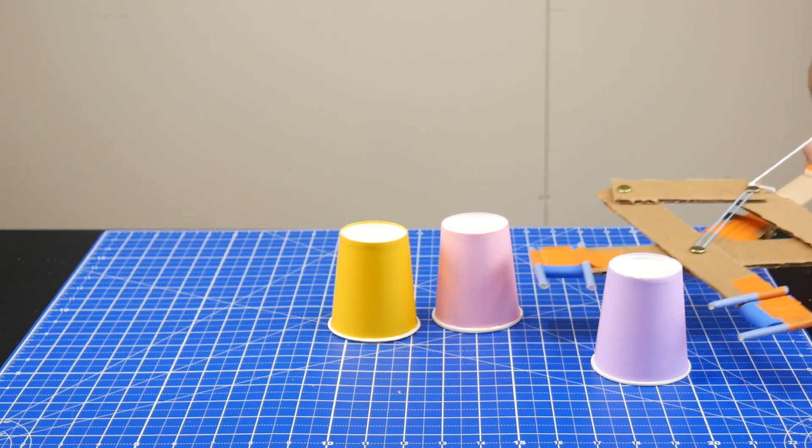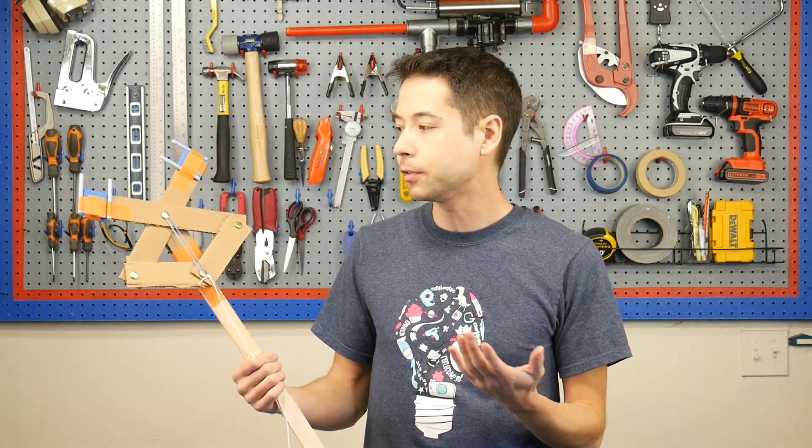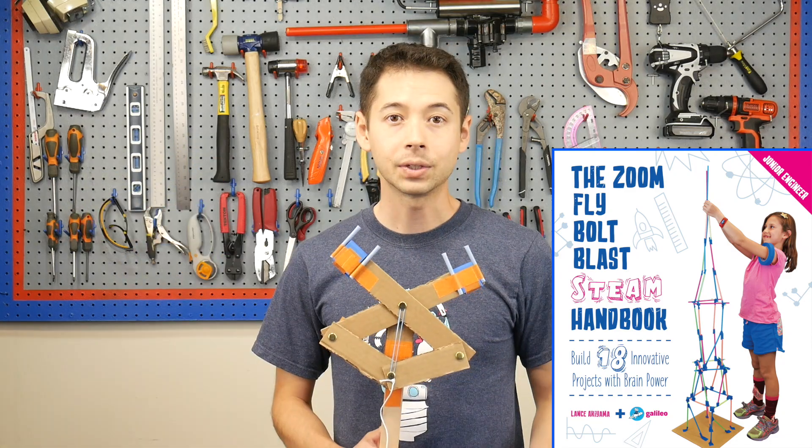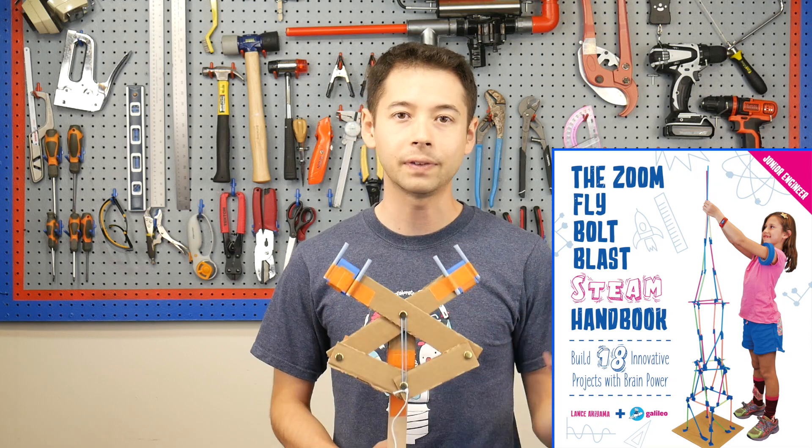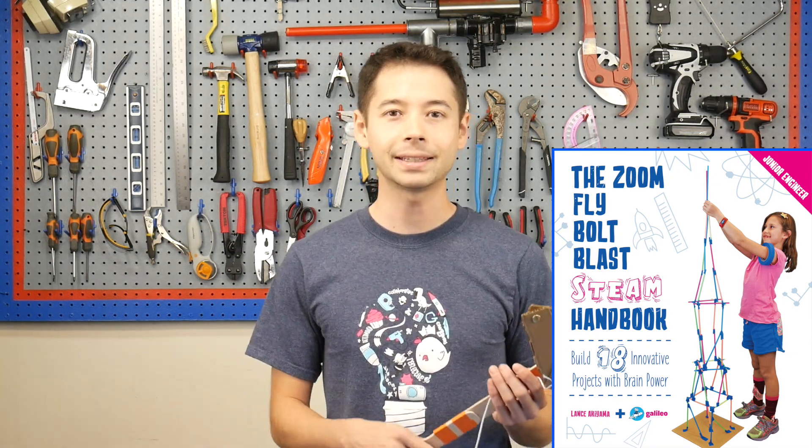And even when it's working, look for new ways to challenge your design. Okay, and that's it! You can see that the grabber is made out of pretty simple materials, and so are all of the other 17 projects in the Steam Handbook. So if you liked this one, definitely go check it out wherever you can find books online. Thanks for watching! Remember to like and subscribe, and I'll see you next time!